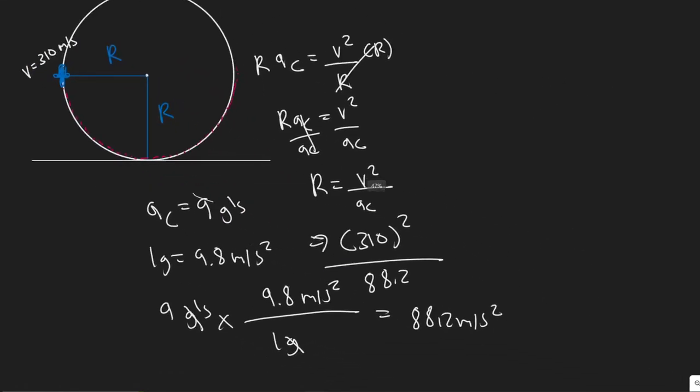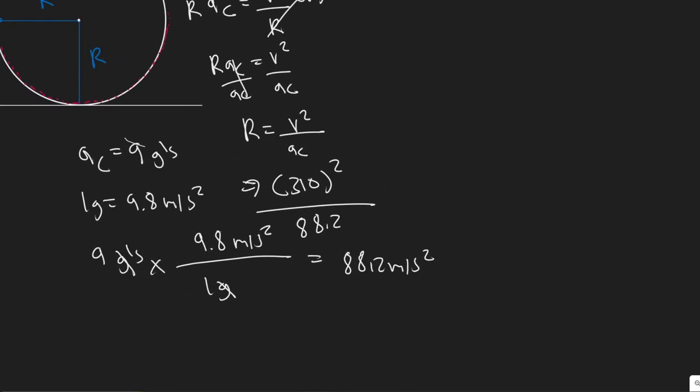So hopefully that makes sense. But it's just going to be 310 squared divided by 88.2. So about 1089.57. So this is about 1.1 times 10 to the 3.